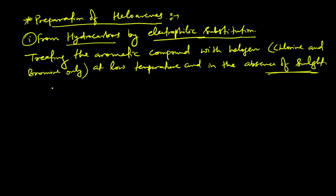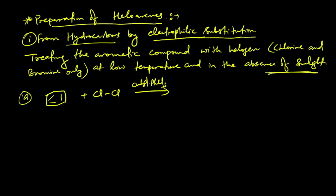So absence of sunlight, we use a reagent. We take the benzene ring and perform chlorination with Cl2 in the presence of anhydrous AlCl3. AlCl3 is a Lewis acid. With this Lewis acid we do halogenation — it generates the electrophile first, the electrophile attacks the aromatic ring, and finally we get the product chlorobenzene.